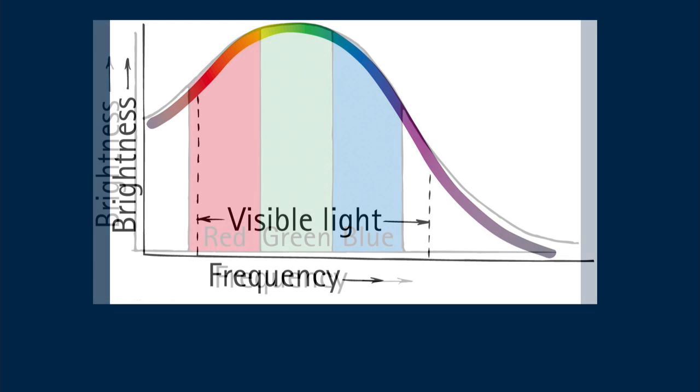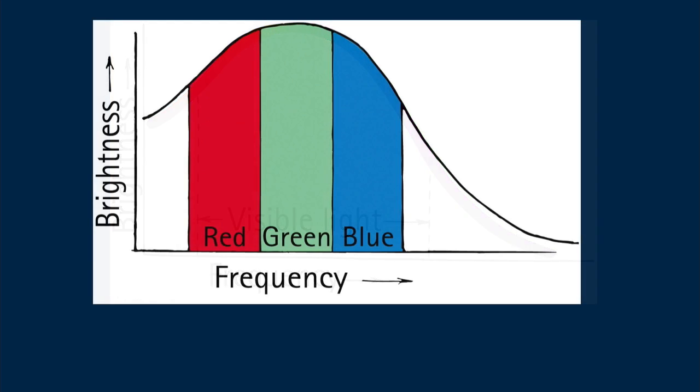Interestingly, the perception of white also results from the combination of only red, green, and blue light. Here the solar radiation curve is divided into three regions: low frequency red, middle frequency green, and higher frequency blue. In short we say RGB.